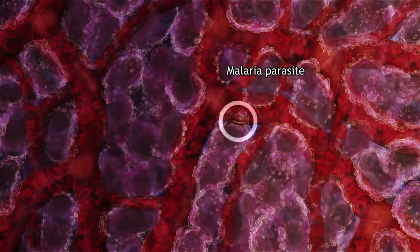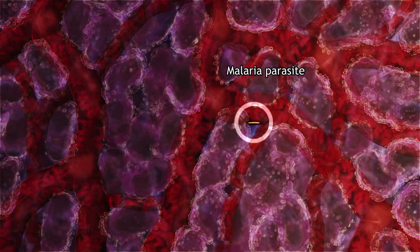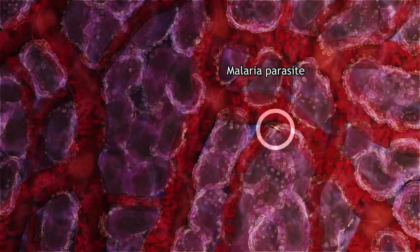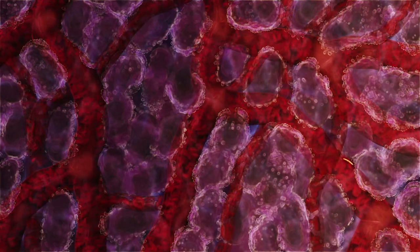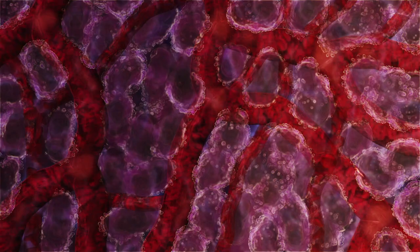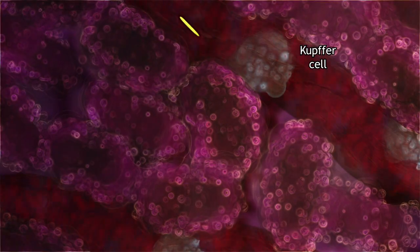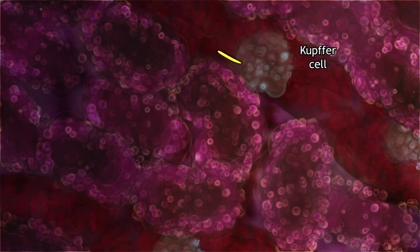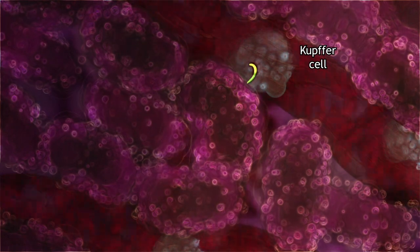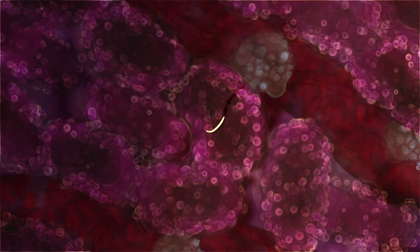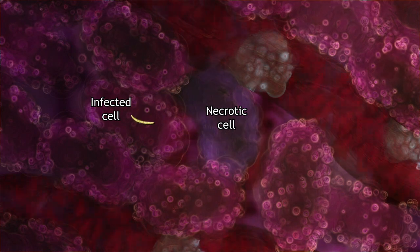Sensing its arrival at the liver, the parasite searches for an exit. A sentinel Kupfer cell is the entry point to liver tissue. Leaving the blood, the parasite infects a liver cell, killing one or more other cells on its way.